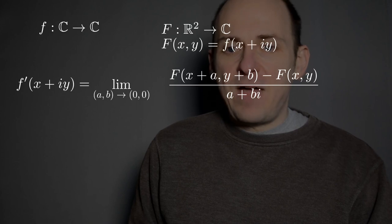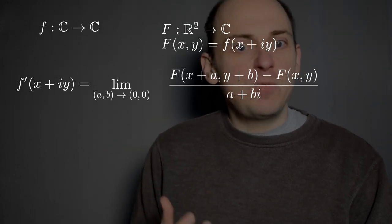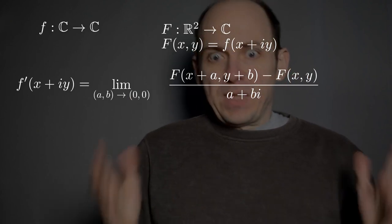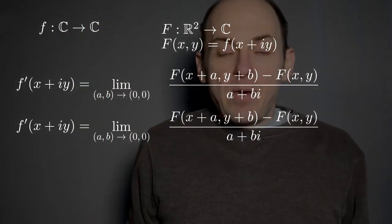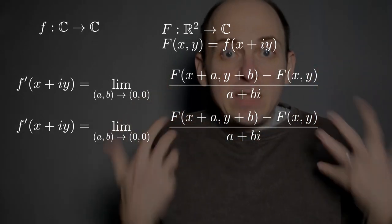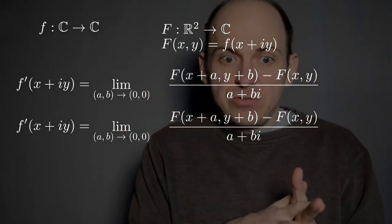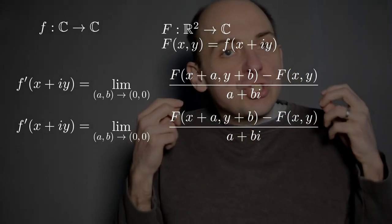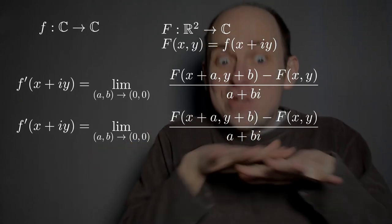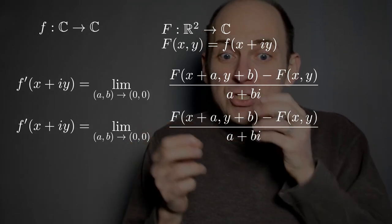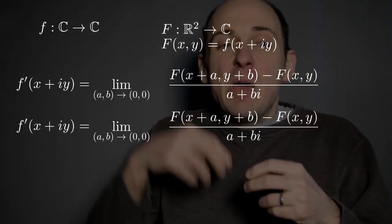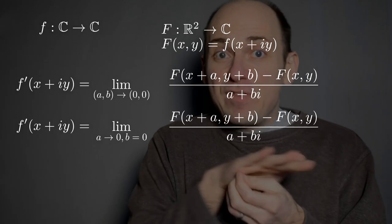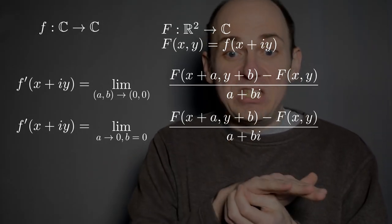The whole thing is still complex-valued — I'm just writing everything in terms of big F, this function of two real variables. Now if this limit exists — this limit of two variables (a, b) approaching (0, 0) — then it's equal to the same limit when I restrict to moving along the real axis, when I approach (0, 0) just along the real axis. That means I set b equal to zero and take the limit as a approaches zero, having fixed b equal to zero.